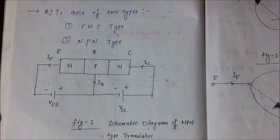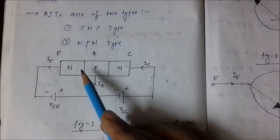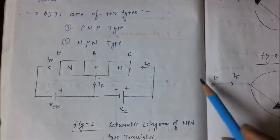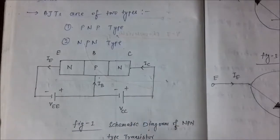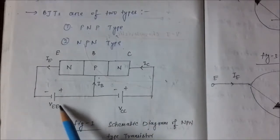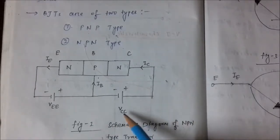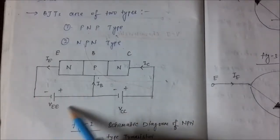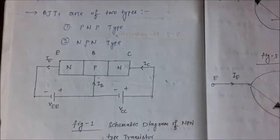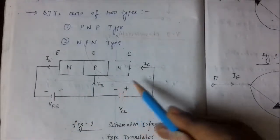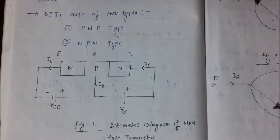We will discuss about these terminals in detail. This is an NPN transistor. These are the biasing voltages which are applied: V-EE, which is applied at the input junction, and V-CC, which is applied at the output junction.